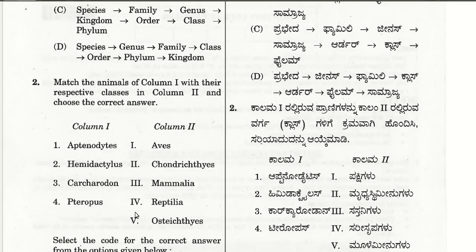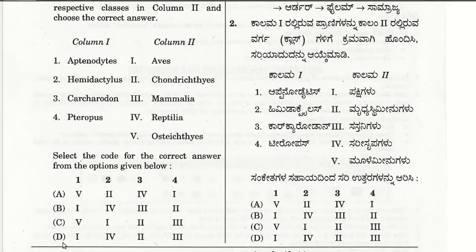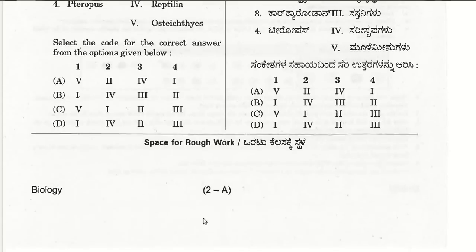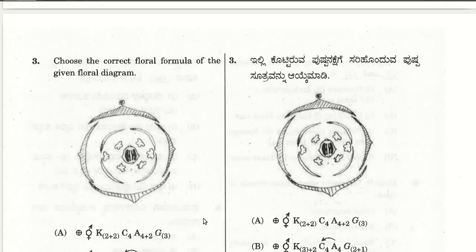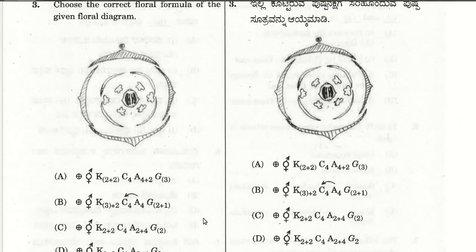After matching: Anodonta is Aves, Dactylus is Reptilia, then Carcharodon is the variety of fishes, and Ornithorhynchus is Mammalia. These are all the scientific names and the classes they belong to. The correct sequence is found in choice D — first, second, and third matches. The third question is to choose the correct floral formula of the given floral diagram.